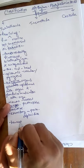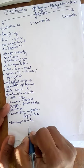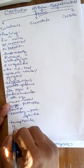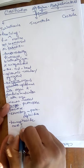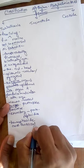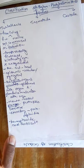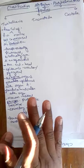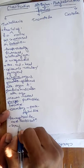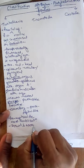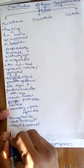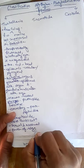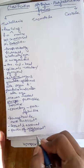Most of these animals are hermaphrodite, meaning male and female reproductive systems are present in a single individual. Cross-fertilization takes place and self-fertilization is avoided. Reproduction takes place by both asexual and sexual methods, and they also possess the power of regeneration.